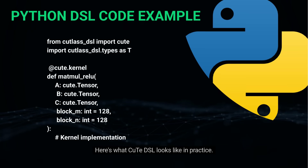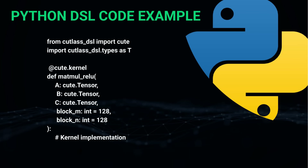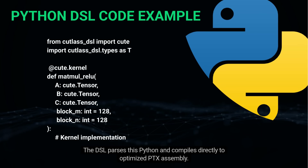Here's what CuTe DSL looks like in practice. You write Python with the CuTe kernel decorator. Type hints use CuTe tensor types. This is actual kernel code, not a wrapper calling C++ behind the scenes. The DSL parses this Python and compiles directly to optimized PTX assembly.